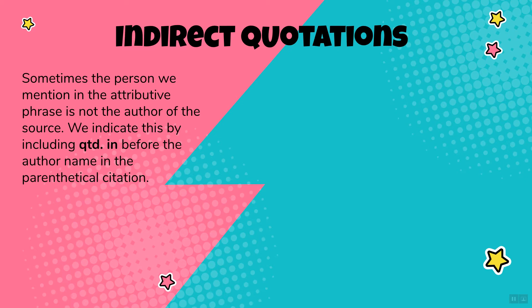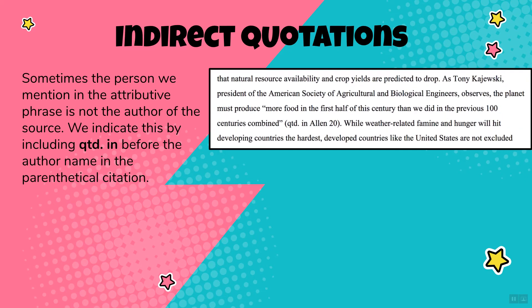Sometimes the person mentioned in the attributive phrase is not the author of the source. In that case, include 'qtd in' — which stands for 'quoted in' — before the author's name in the parenthetical citation. The best reason to name someone else is because that person is the expert. If the writer of the source you're reading includes an expert opinion, you can and should highlight that expertise. For example: 'As Tony Kajewski, president of the American Society of Agricultural and Business Engineers, observes' — that sounds like someone who knows what he's talking about.